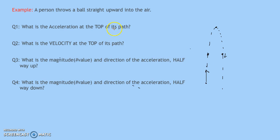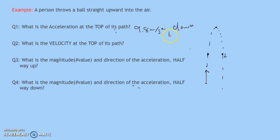For questions one, two, three, and four — acceleration from gravity never changes: always down, always 9.8 meters per second squared. It's true at the top, it's true halfway up, it's true halfway down. No matter where it is, that acceleration will be the same.